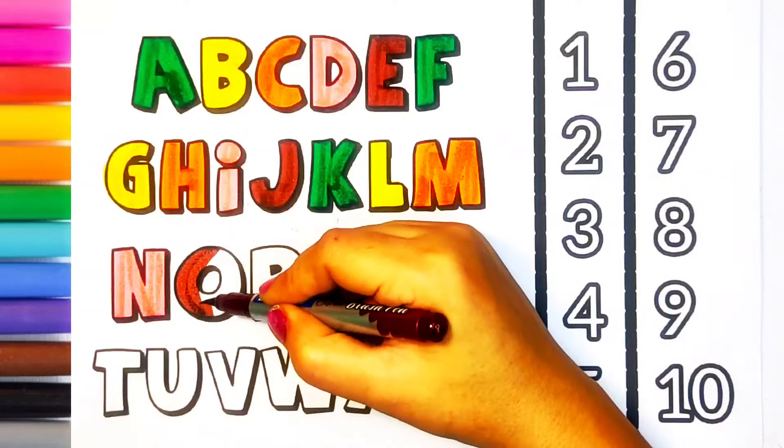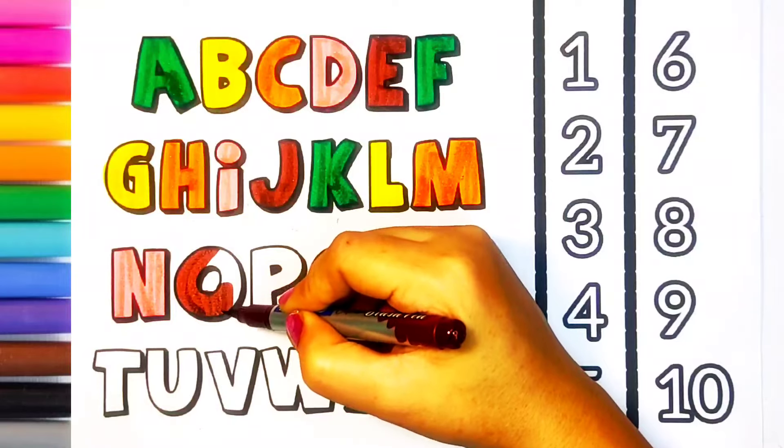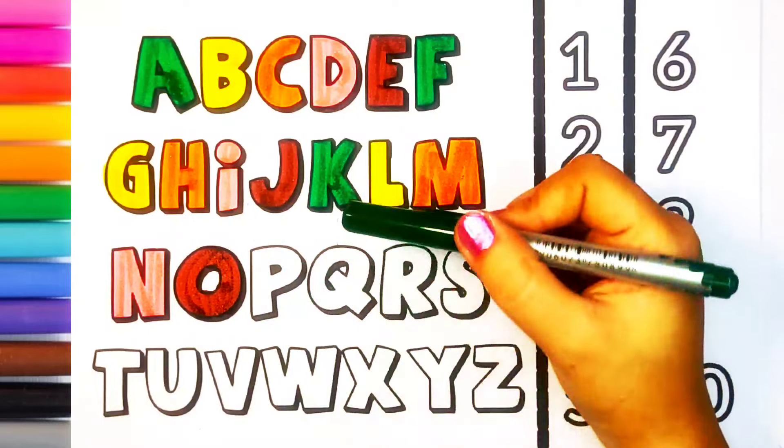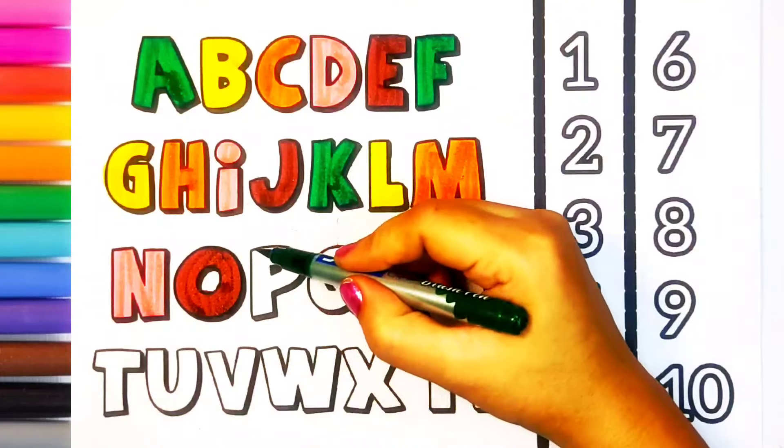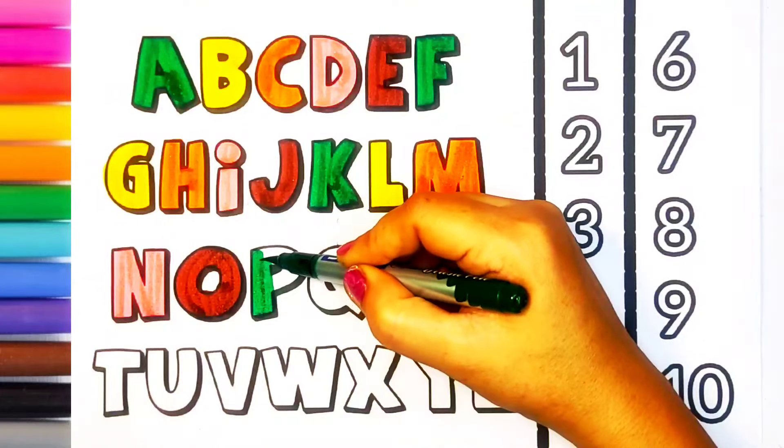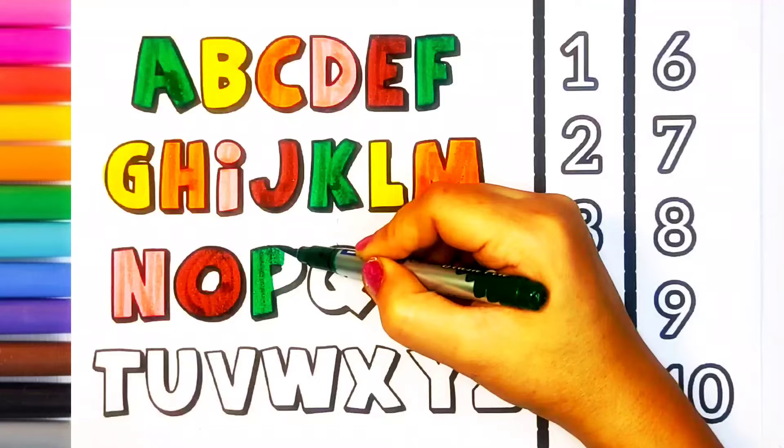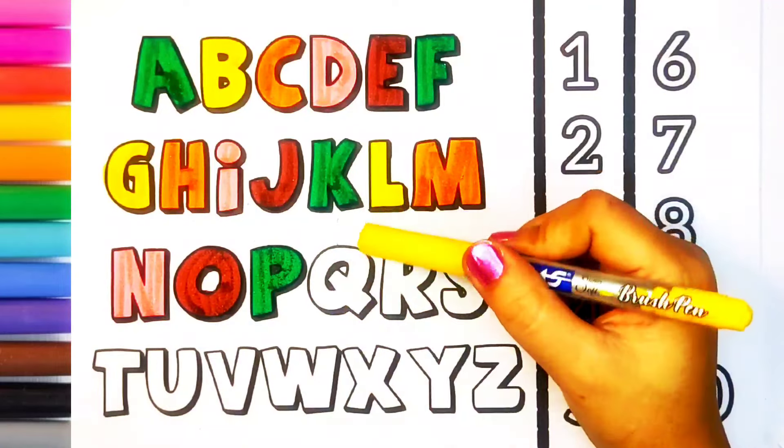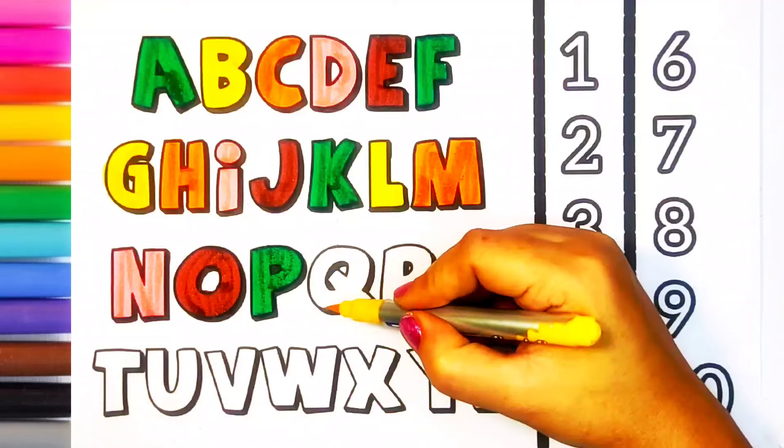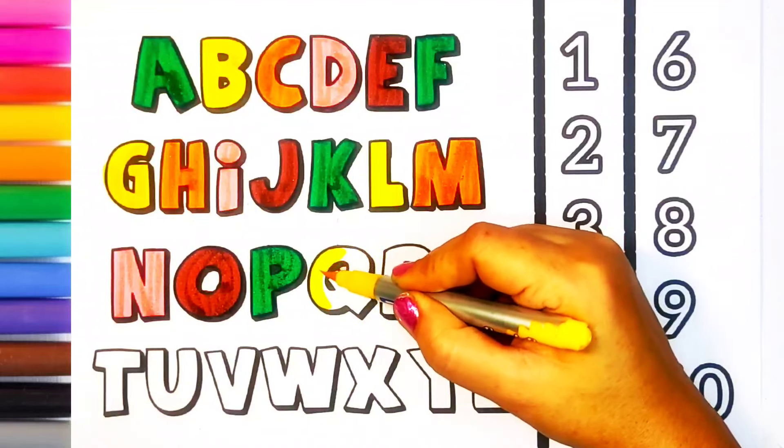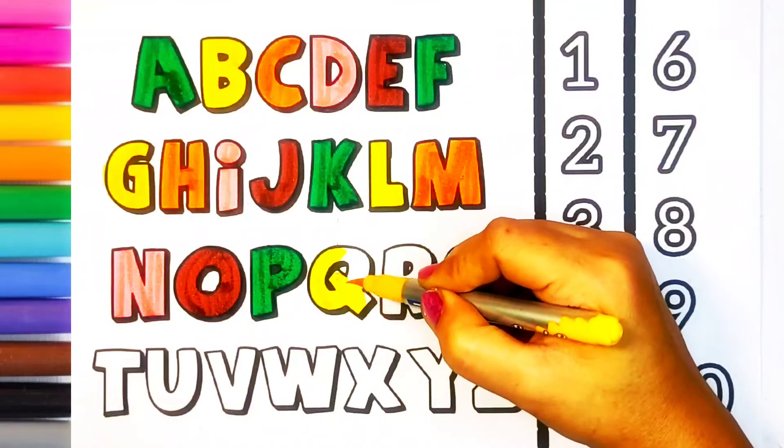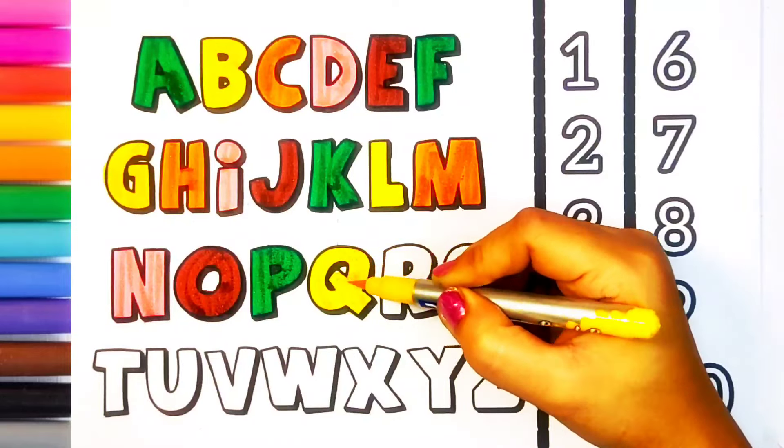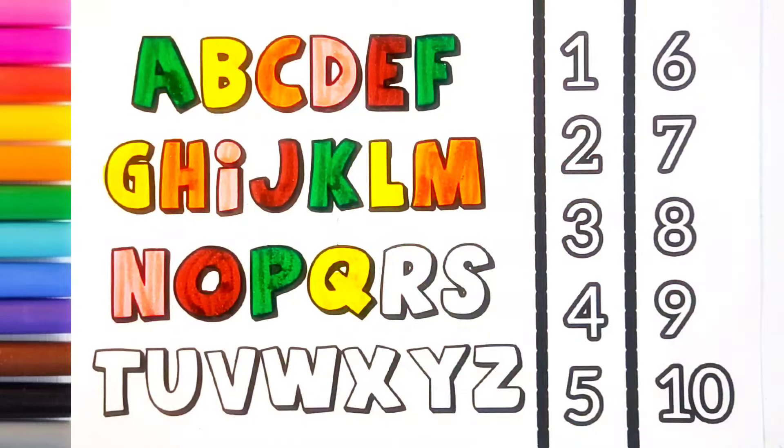Brown color, O, O for orange. Dark green color, P, P for peacock. Yellow color, Q, Q for queen.